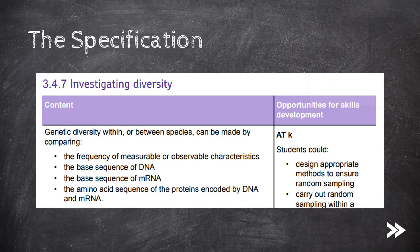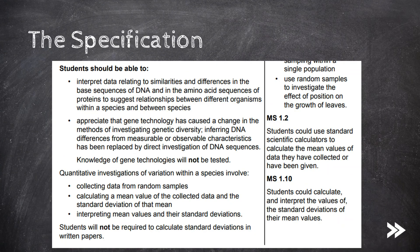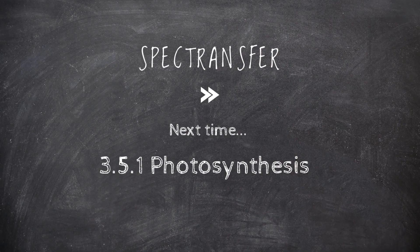So we've had a look at the different ways of comparing genetic diversity within or between species, and covered how each of these can be used to determine diversity. We've appreciated that gene technology has caused a change in the methods of investigating genetic diversity, and covered how we might investigate variation within a species. That would be it for now, guys — thanks for watching. Please comment and subscribe; if you have any ideas or suggestions, just post them down below. This is the end of the AS part of the AQA A-level biology specification. Next time, we'll move on to the A-level only part, starting with photosynthesis.